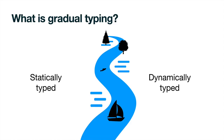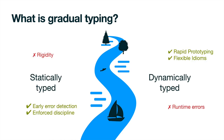We'll begin by providing a 5-minute summary. Historically, languages were separated into statically and dynamically typed, each with their own costs and benefits. Dynamically typed languages provide rapid prototyping and flexible idioms, at the cost of possible errors at runtime. While statically typed languages provide guarantees before running a program, at the cost of rigidity.